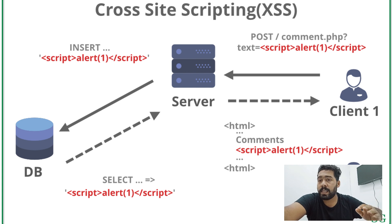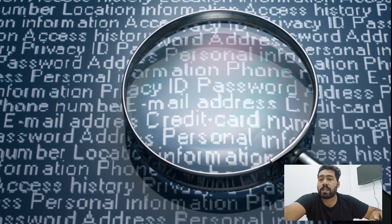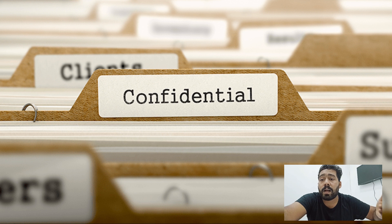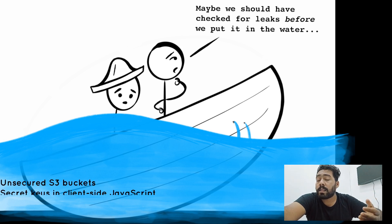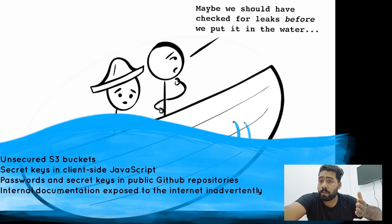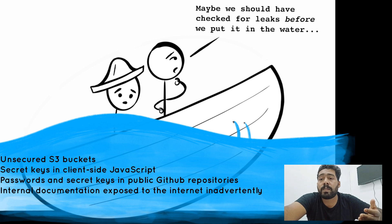The final category is sensitive data exposure. This includes secret keys, PII, passwords, and username lists that are accessible in ways they shouldn't be. Common scenarios include: unsecured S3 buckets, secret keys in client-side JavaScript, passwords and secret keys publicly exposed in GitHub repositories, and internal documentation exposed on the internet without any security.